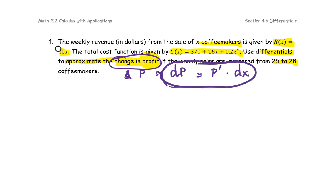So let's see what we have here. We have the revenue function as 40x, the cost function as 370 plus 16x plus 0.2x squared, and x1 equals 25, x2 equals 28.